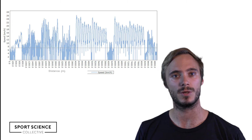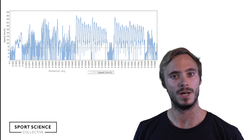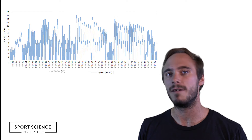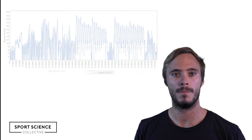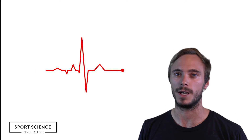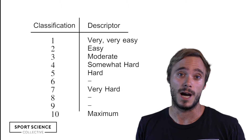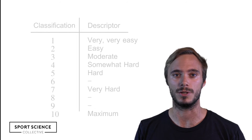The external workload represents the work completed during training and games — for example, distance covered, average speed or mean power output. The internal workload represents the psychophysiological response, or the cost, experienced by each athlete during training and games, which can be measured by heart rate or session rating of perceived exertion.